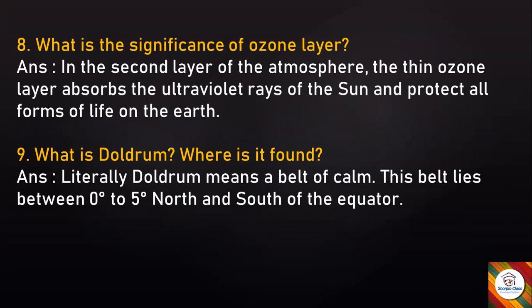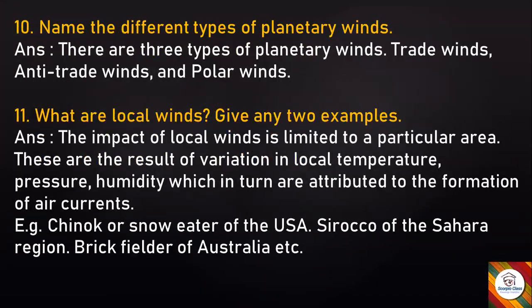Question 10: Name the different types of planetary winds. Answer: There are three types of planetary winds — trade winds, anti-trade winds, and polar winds. What are local winds? Give any two examples. Answer: The impact of local winds is limited to a particular area. These are the result of variation in local temperature, pressure, and humidity, which in turn are attributed to the formation of air currents.